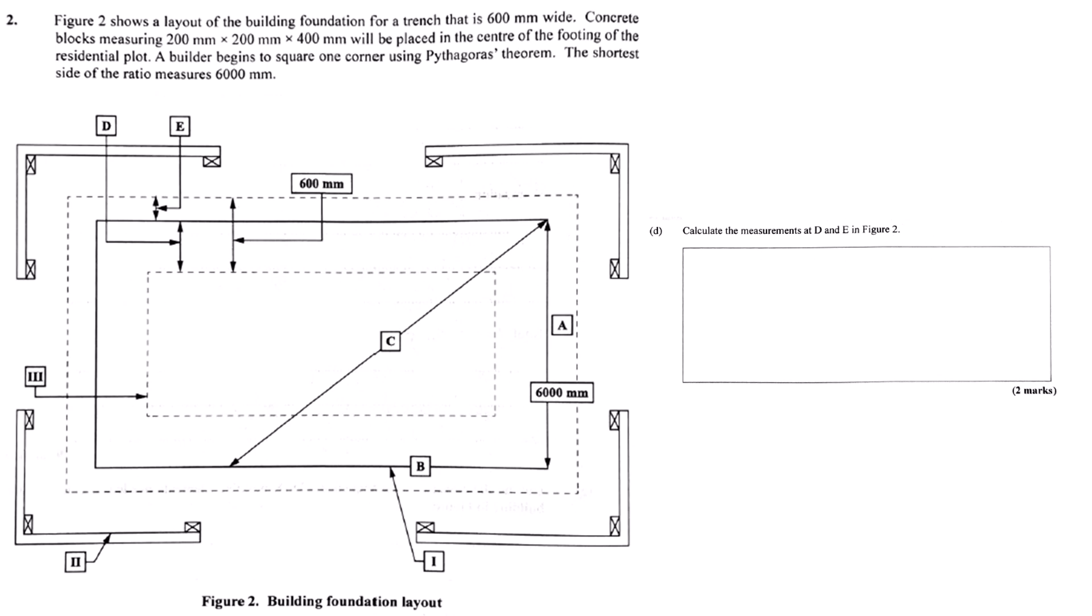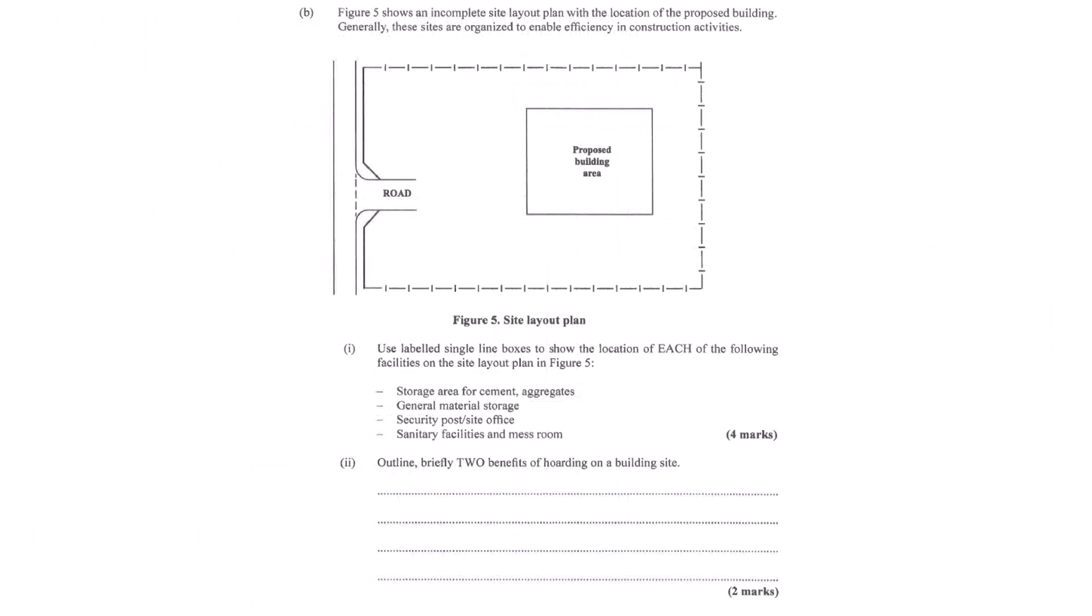Okay, so trenches are dug, but a building site is chaos. Materials everywhere, people, machines. It can be, if it's not organized. Our source actually shows a basic site layout plan and gives some pretty smart advice, like put cement and aggregate storage near the mixer. Makes sense. But maybe away from the road to keep dust down. General materials nearby, with room to move them. Site office security near the gate to see who's coming and going. And things like toilets or the break room tucked away in a quieter corner for hygiene and safety. A well-organized site isn't just efficient, it's much safer too. Fewer hazards, less wasted time finding things. Precisely. Good flow, good conditions.